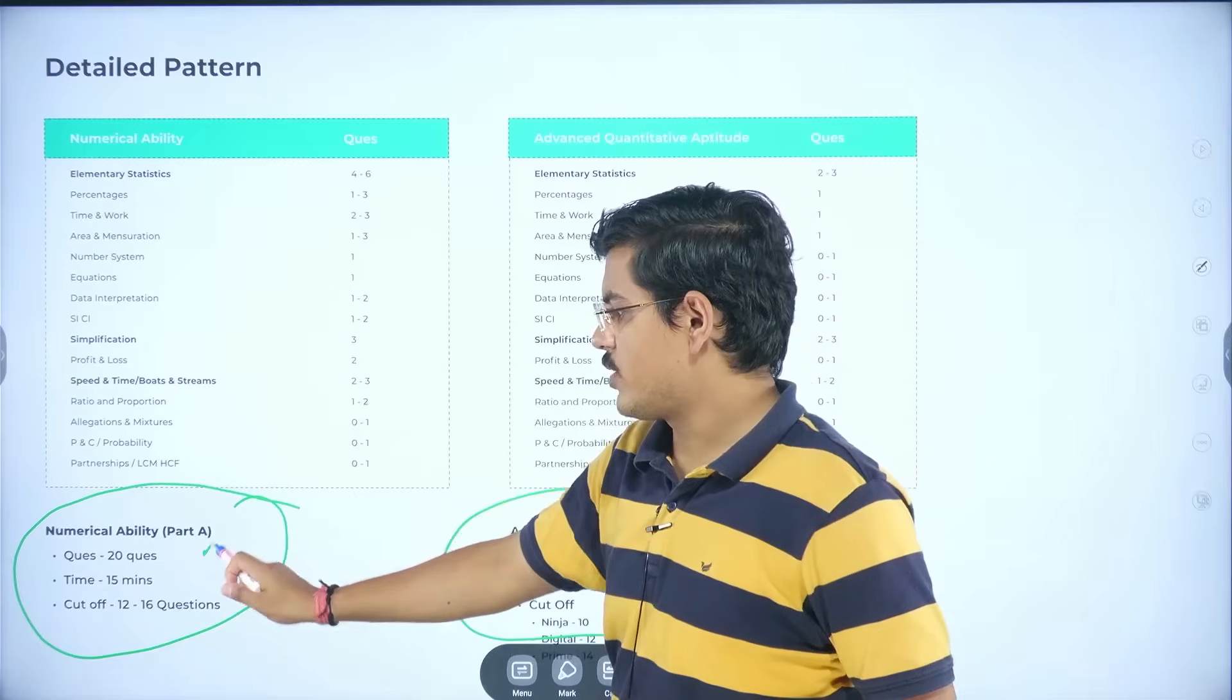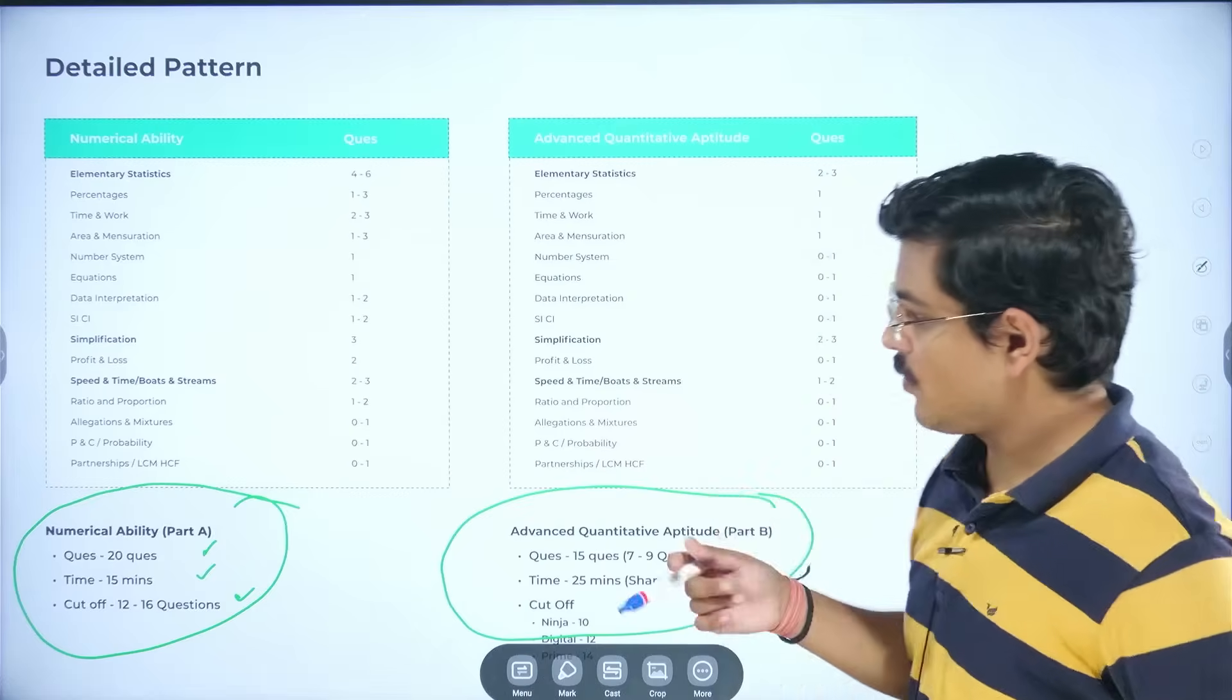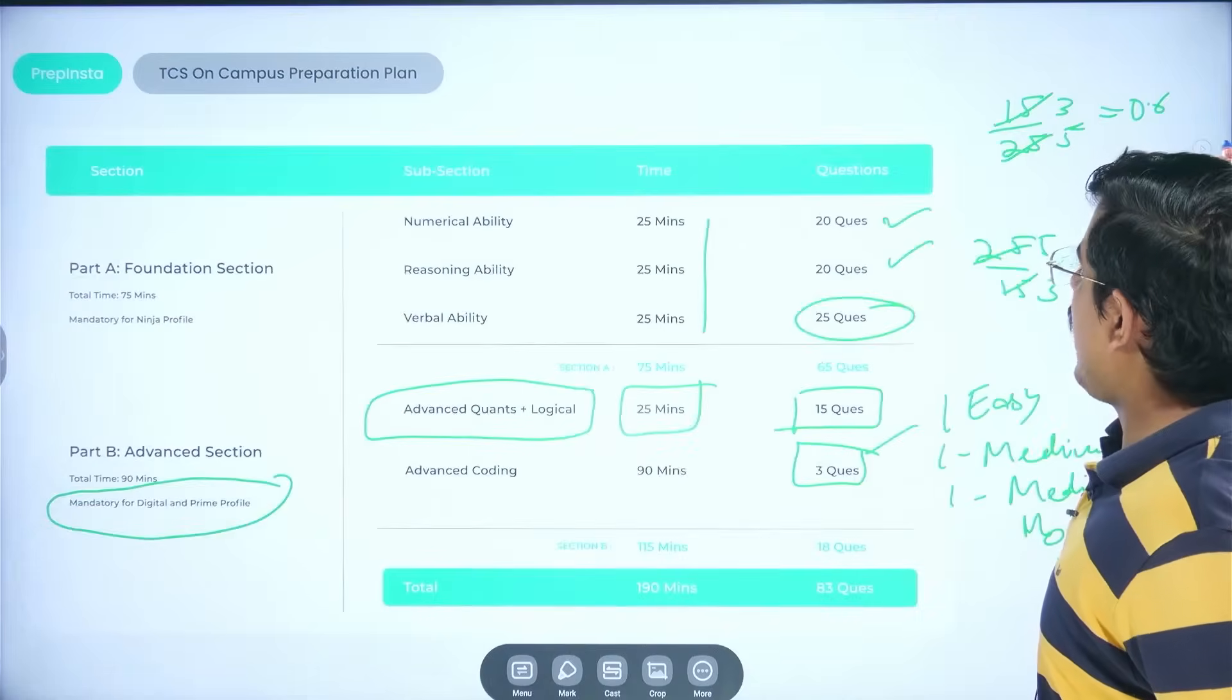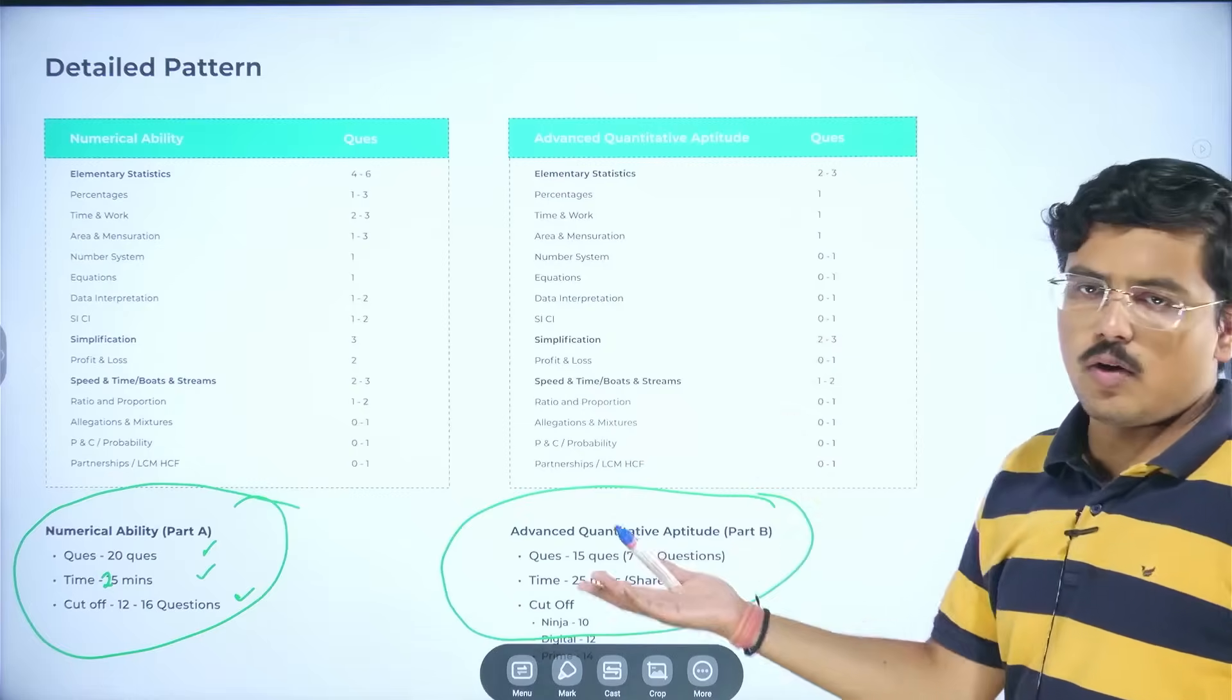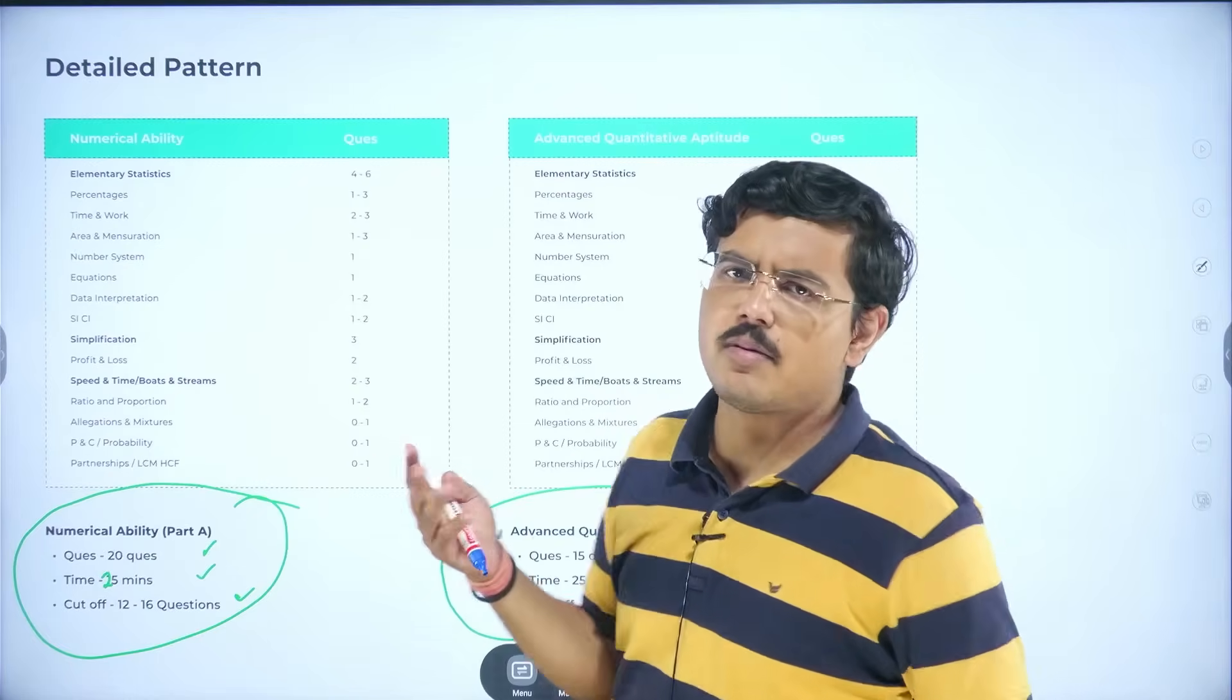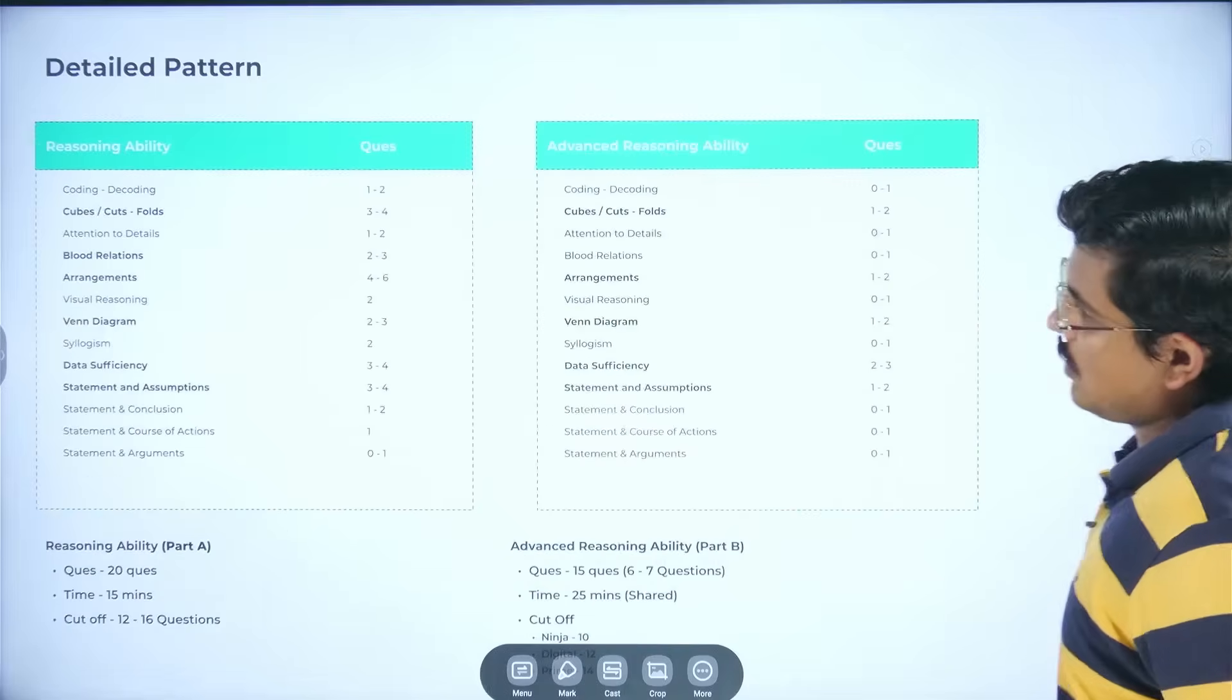You have generally 20 questions in 25 minutes. And you have 12 to 16 questions cutoff. The cutoffs are written here. Percentages, time and work, surds and indices, simple interest, compound interest. Such questions generally appear in advanced quantitative aptitude.